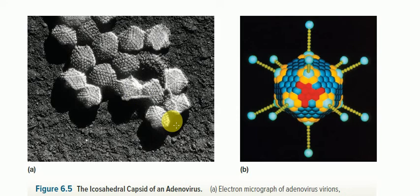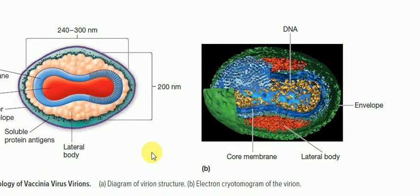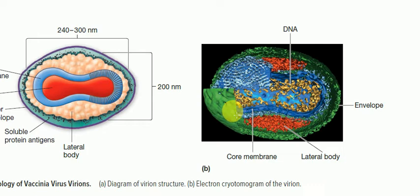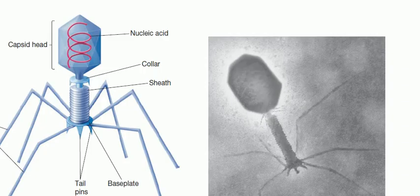For vaccinia viruses, there is a membrane outside, and inside there is a core containing nucleic acid inside the lumen. We call it an envelope given to the nucleic acid — the core membrane. The structure contains DNA as shown in the diagram. This is a vaccinia virus.